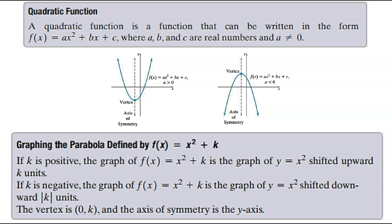So that's what we have graphed on each of these. Notice when a is greater than zero, then my parabola opens upward, and when a is less than zero — which means it's a negative number — then my parabola opens downward.